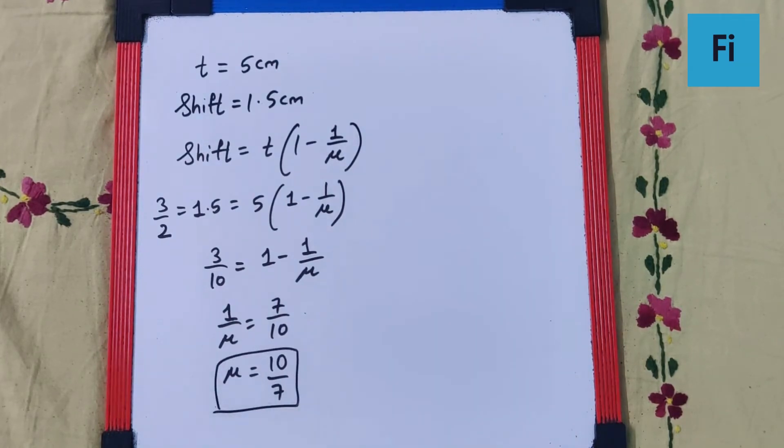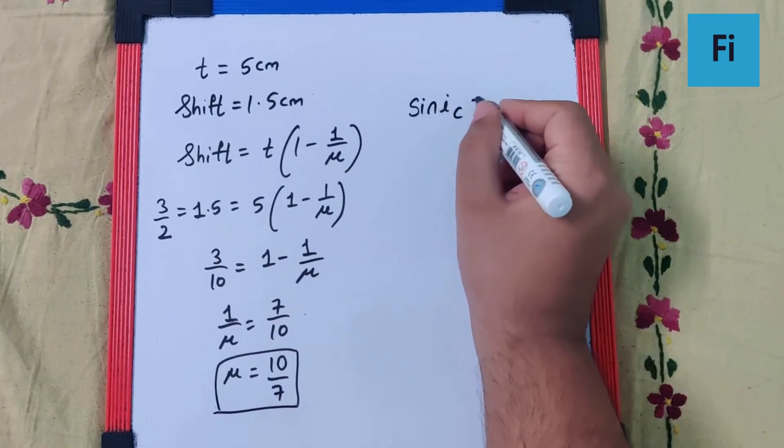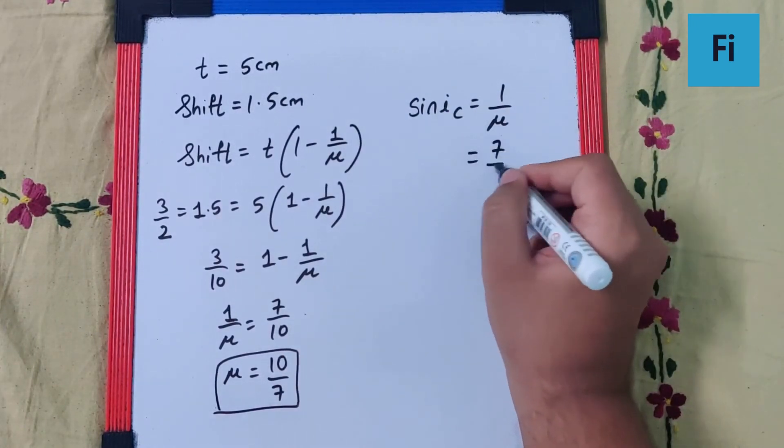Now the critical angle at the boundary of this transparent material and air. We have to use for critical angle sin i_c equals 1 upon mu, which means that is going to be 7 by 10.